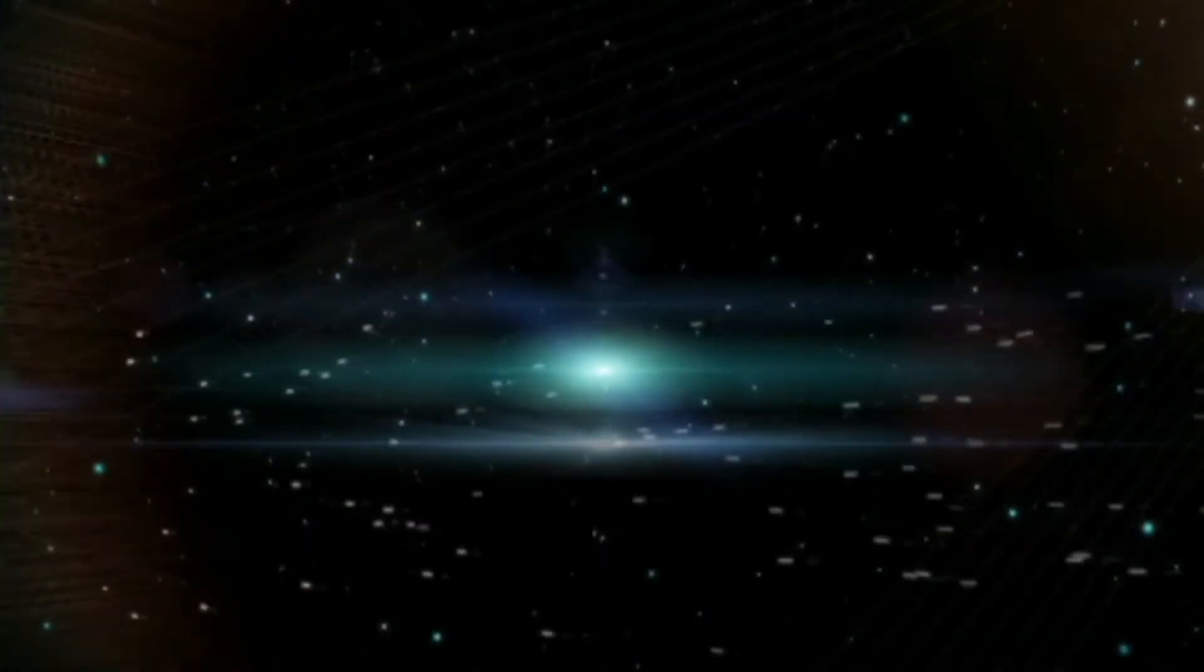The team were studying a supernova in a galaxy more than 9 billion light years away when they noticed a pinprick of light that appeared four times brighter than in a previous image. This seemed to come from an object in the same galaxy as the supernova and appear in the environs of a well-known galaxy cluster that lay just over 5 billion light years from Earth.